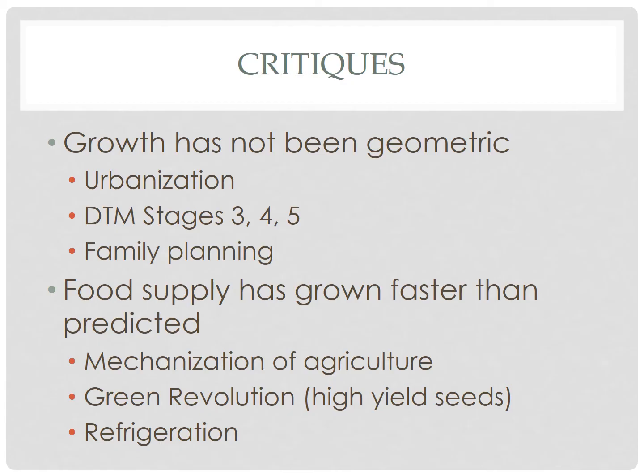Family planning and the increased use of contraception has meant that women have greater control over the number of children that they have. As a result, the global total fertility rate has been cut in half. It's expected that the global population will peak sometime in the late 21st century and then actually begin to decline. But in the short term, global population is expected to increase by 85 million people per year for the next several decades. The other factor that Malthus focused on was food. Since Malthus' time, global population has doubled three times, but during that same time, food production has doubled five times.